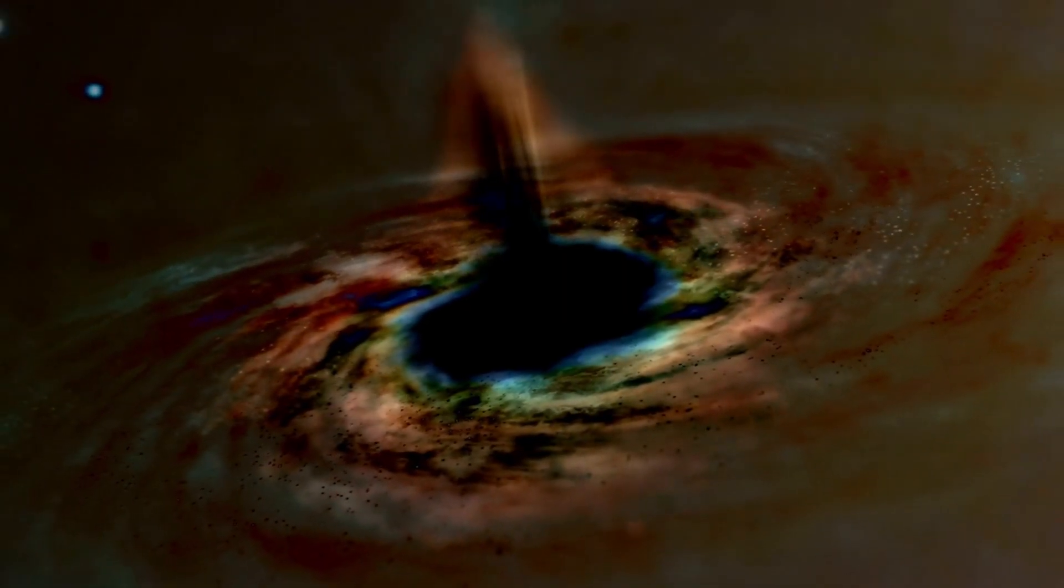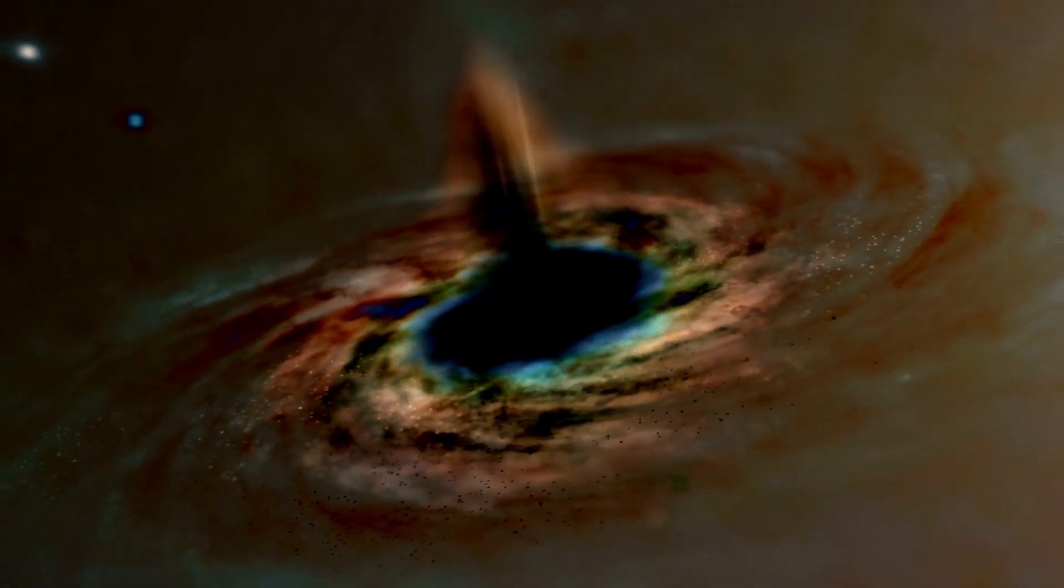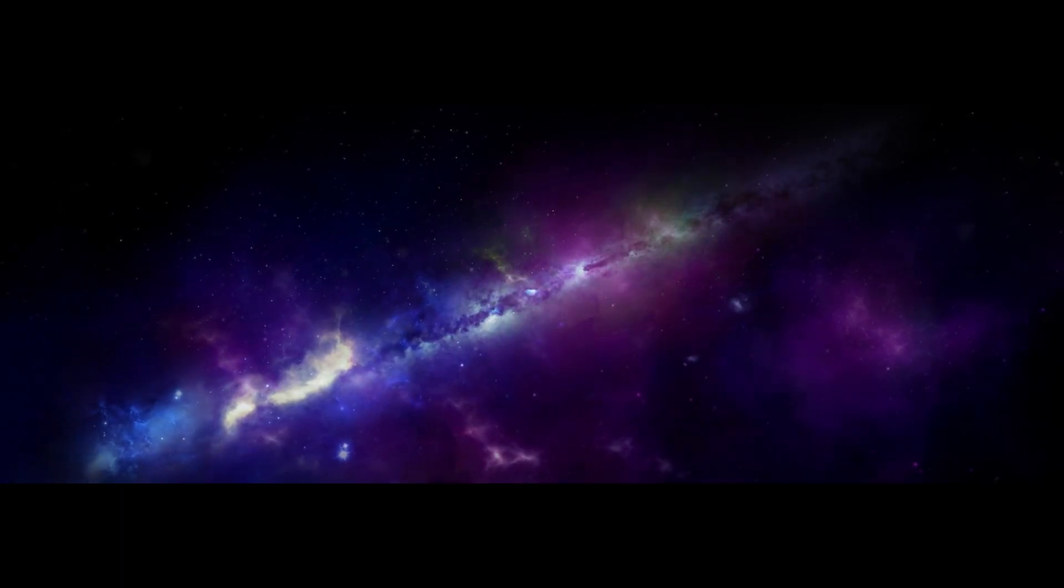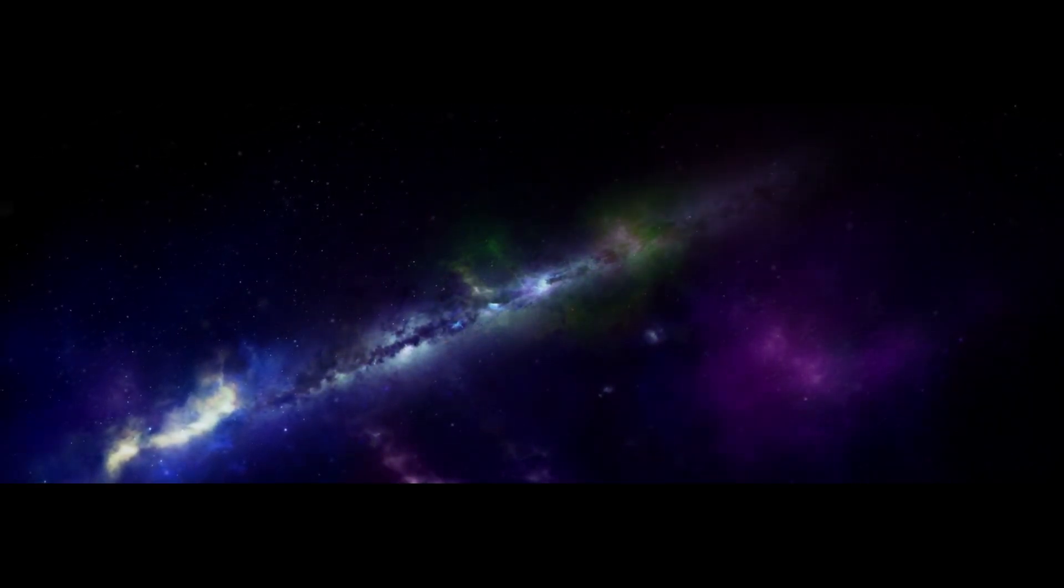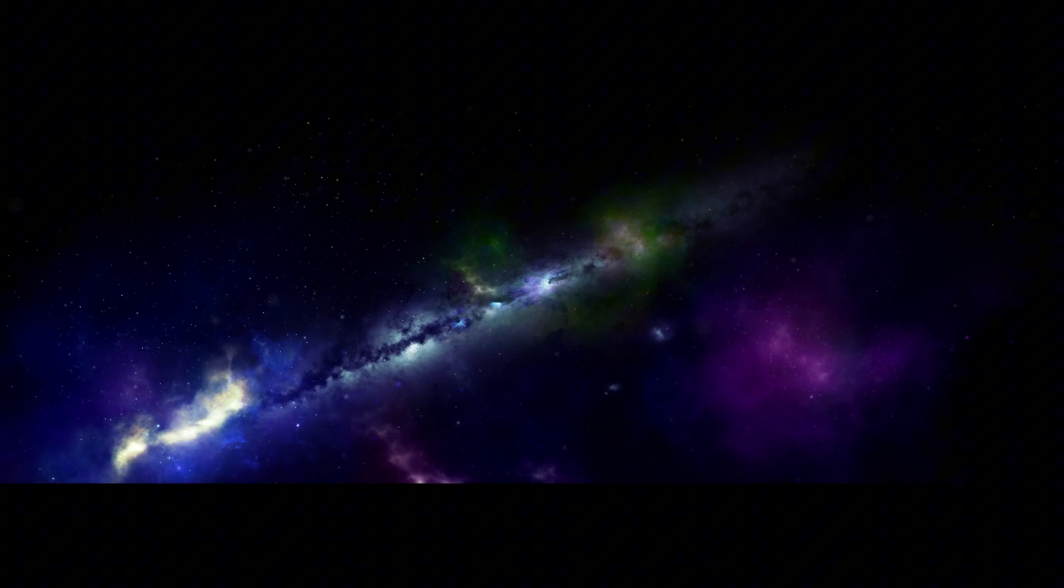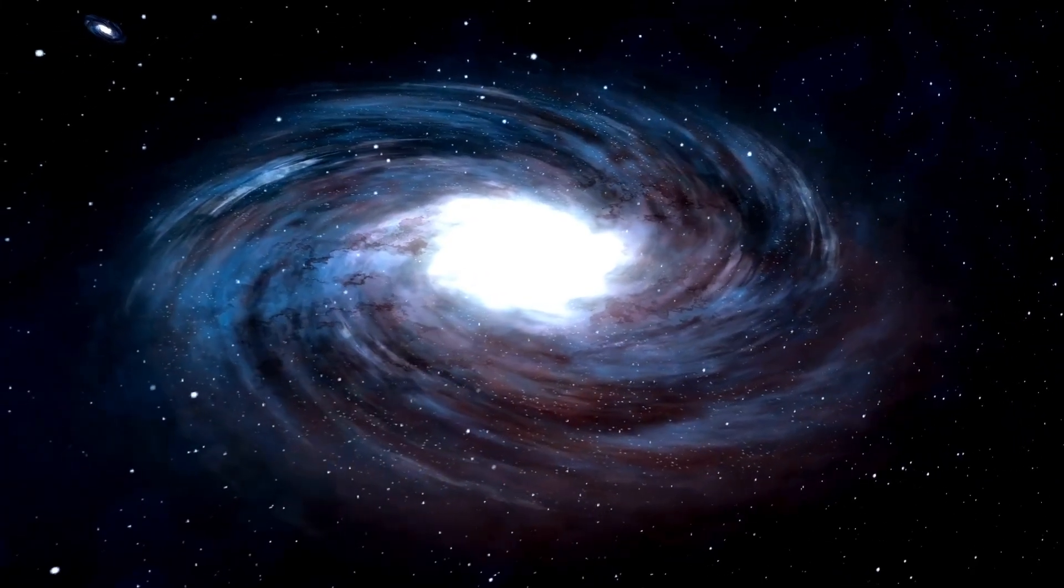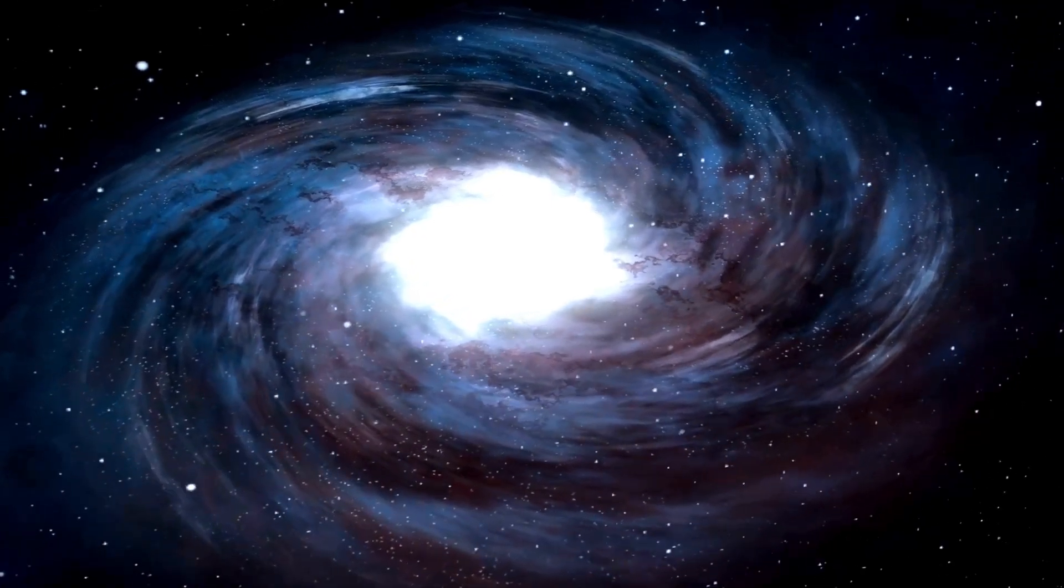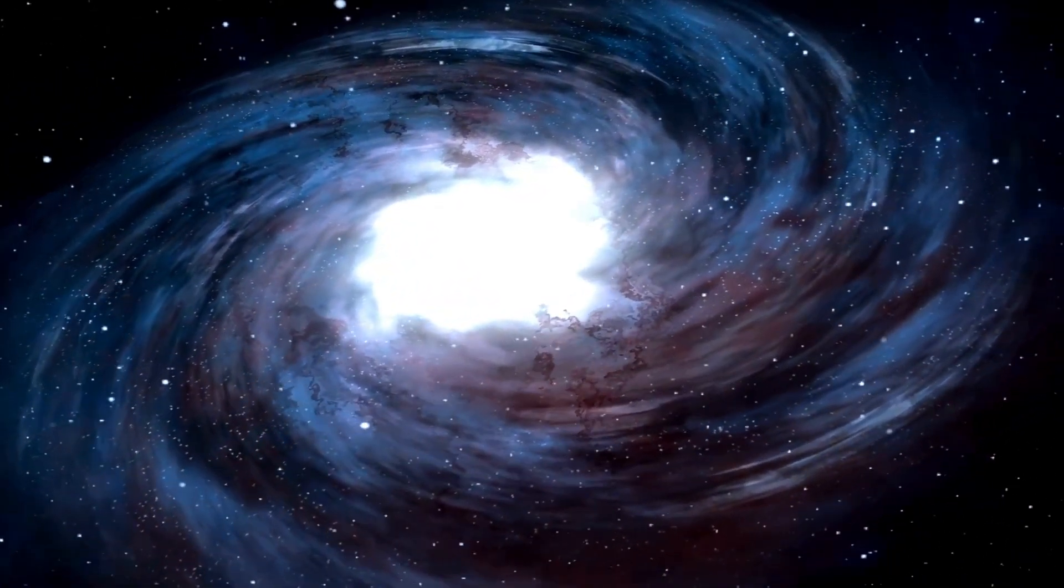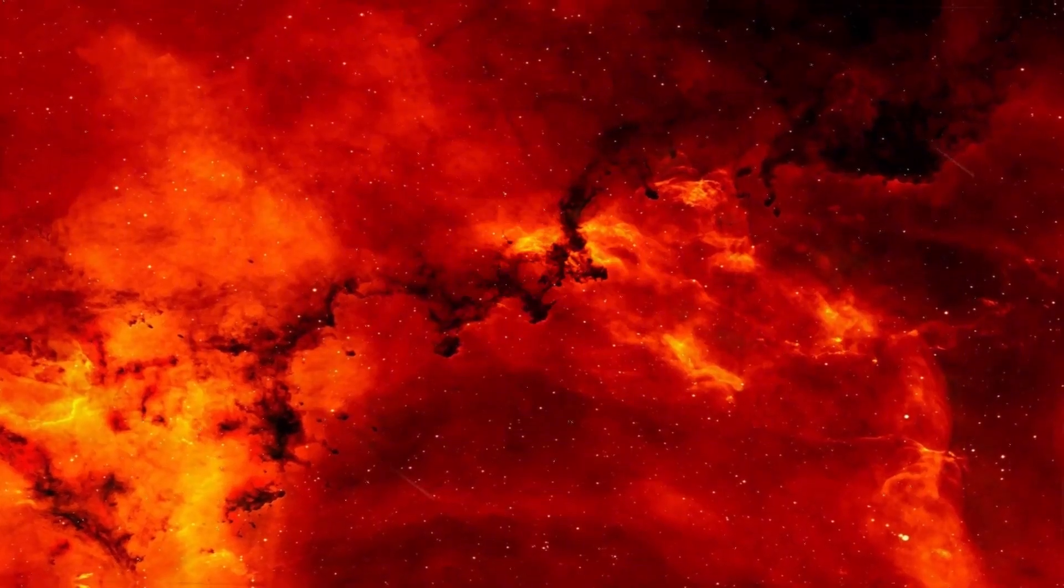Betelgeuse's sheer size is nothing short of astounding. If this star were to take the place of the sun in our solar system, its massive girth would extend far beyond the orbit of Mars, engulfing the inner planets, including Earth. Not only would it dominate the space within Mars' orbit, but its outer edges would likely reach into the asteroid belt, a vast region filled with rocky debris and smaller celestial bodies.